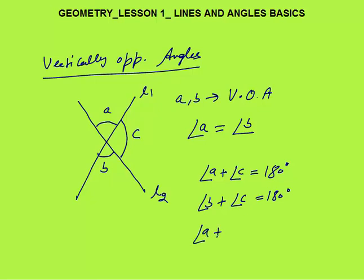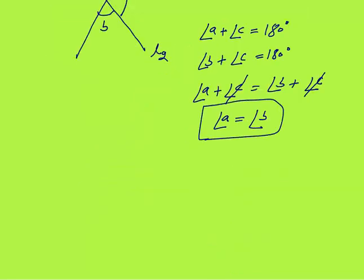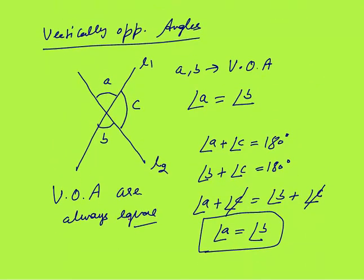Since A plus C equals 180 and B plus C equals 180, we can say angle A plus C equals angle B plus C. C cancels out, and we are left with angle A equals angle B. That's why vertically opposite angles are always equal.